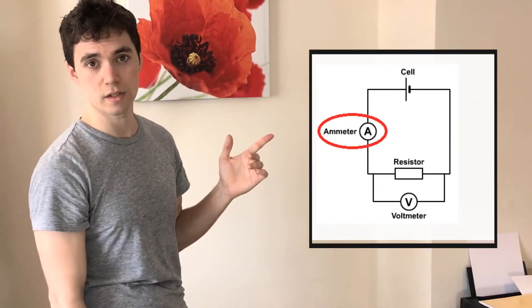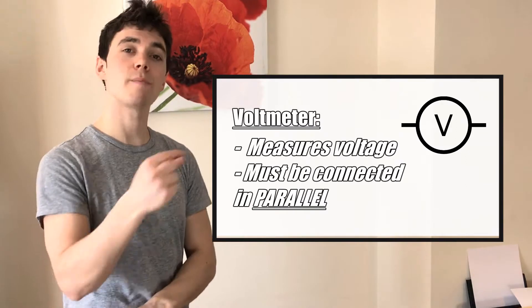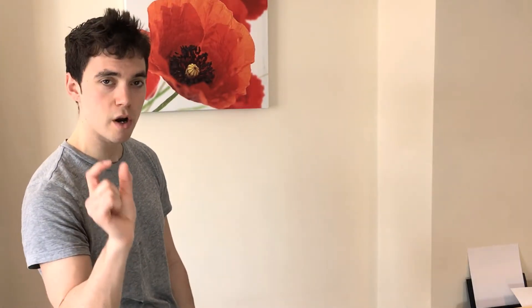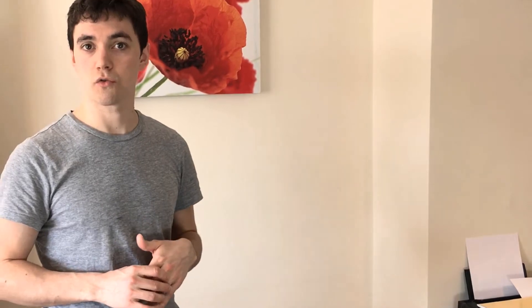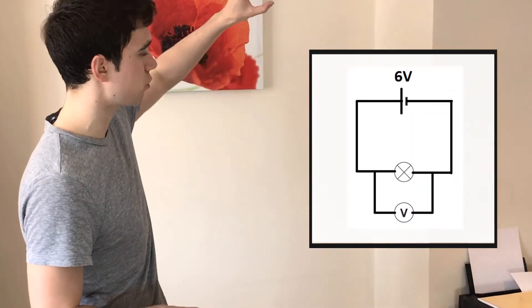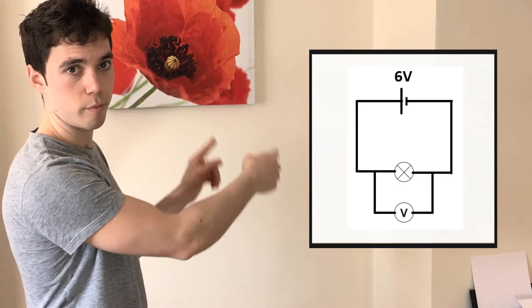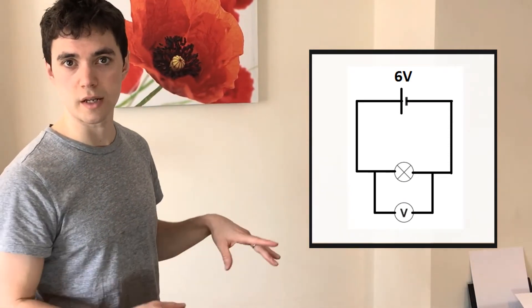A voltmeter, however, must not be connected in series — it must be connected in parallel. Voltmeter always in parallel, never in series — it won't work. This is because voltmeters have very, very high resistance, so if you put a voltmeter in series the whole circuit would stop working and the current would stop flowing. Voltmeters must be connected in parallel across the component whose voltage you're measuring. For example, with a six-volt supply and one filament bulb, you'd connect the voltmeter across the filament bulb in parallel.